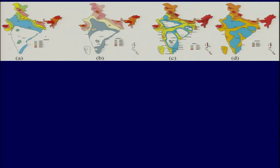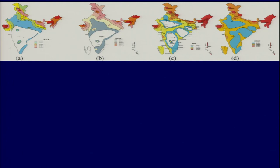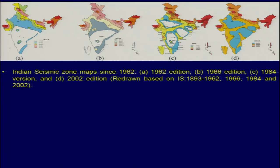The Indian seismic zonation maps have been published in editions of 1962, 1966, 1984, and then 2002 — the last one following the 2001 Bhuj earthquake. After 2001 we no longer have Zone 1; Zone 1 was removed. The red areas represent Zone 5, and the current map ranges from Zone 2 to Zone 5.